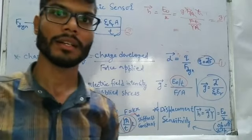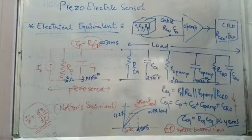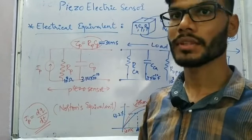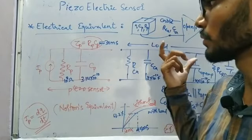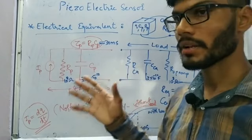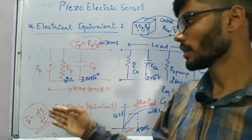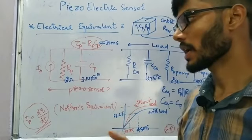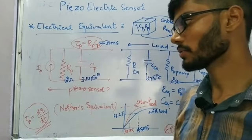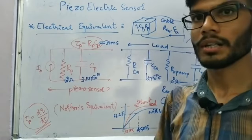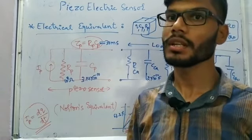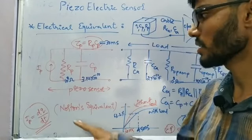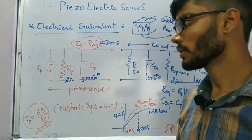Now we will look at the electrical equivalent circuit of the piezoelectric sensor. The equivalent circuit is a Norton equivalent, and we will consider two cases: without load and with load. Without load, since we apply dynamic force, we get a rate of change of charges, giving current IP = dQ/dt.